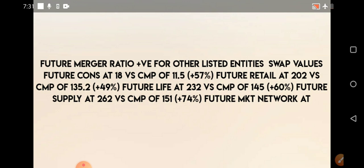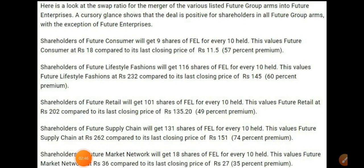For people who are already holding Future Enterprise Limited shares, they will not get any extra shares — whatever they're having is only their particular number of shares. Now let's see how many shares you will get for each company. If you are holding Future Consumer, you will get 9 shares of FEL for every 10 shares of Future Consumer — that is what gives us almost 57 percent premium.